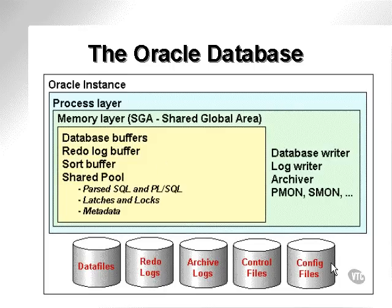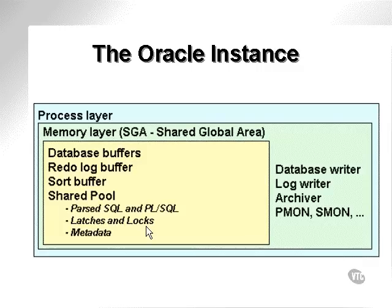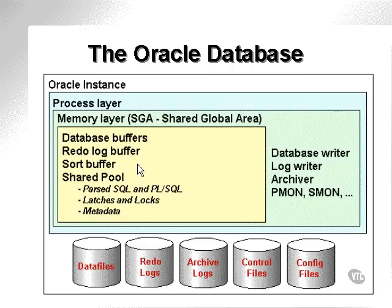Configuration files are files such as the parameter file, which you can use to change the behavior of the Oracle database. So the Oracle instance, consisting of the process and memory layers, is connected to all the database files making up the Oracle database.